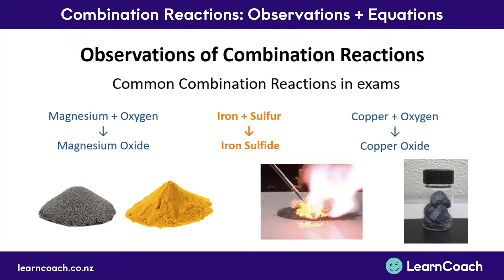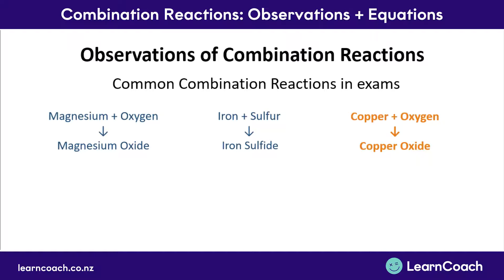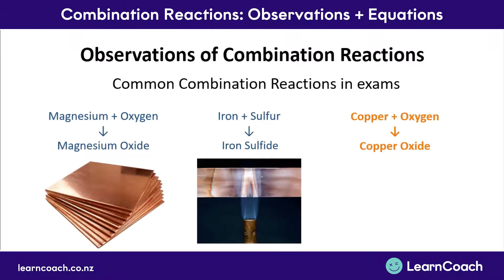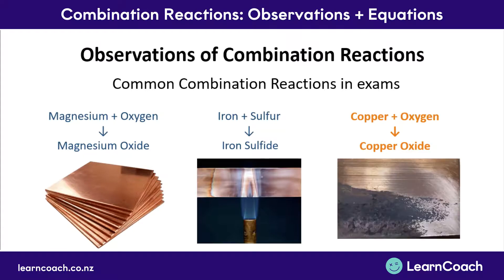Looking at copper and oxygen: copper is a pinky metallic metal and oxygen is a colourless gas. To combine copper and oxygen, we burn a piece of copper in a Bunsen burner. This forms copper oxide, which appears as a dark powdery film on the surface of the copper metal.